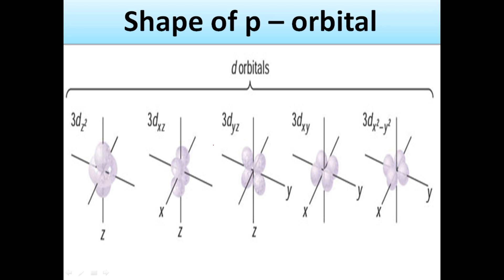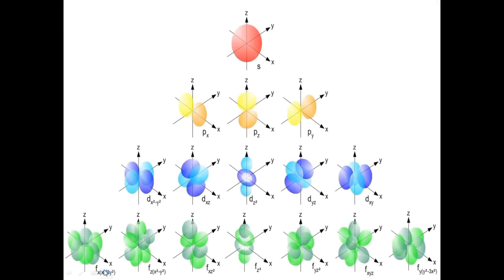The shape of the d orbital is a double dumbbell or clover leaf. The d orbital has 5 sub-orbitals — how to calculate sub-orbitals is another topic we will also discuss. The shapes of the d sub-orbitals are shown in the figure. The overall image shows the shapes: s, p, d, and the very complex shape of the f orbital.